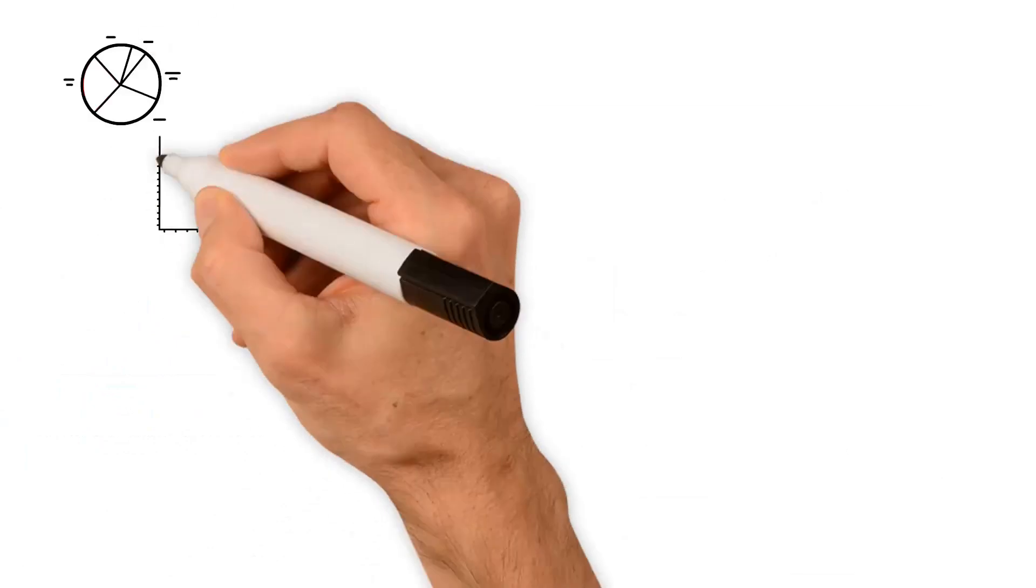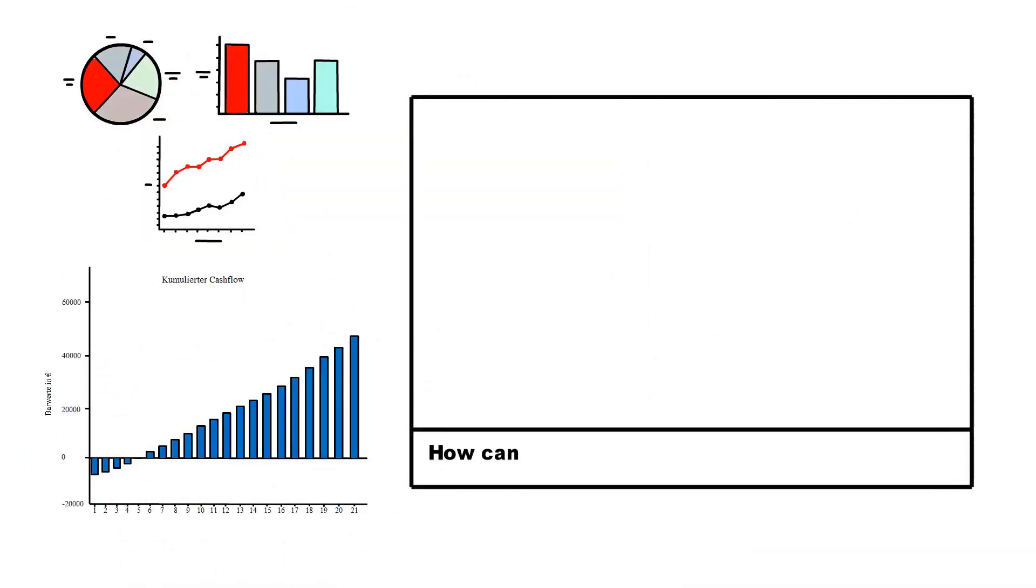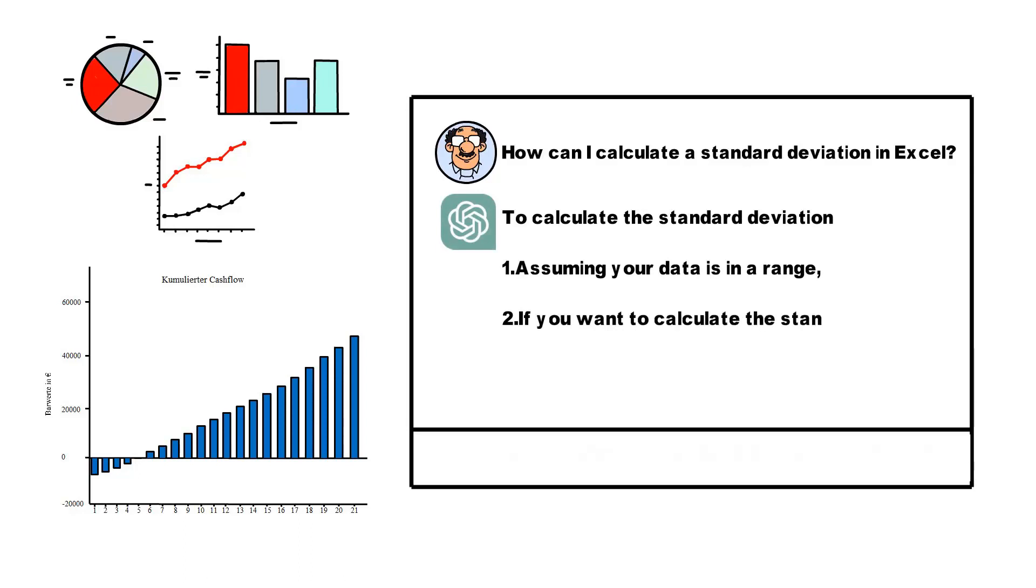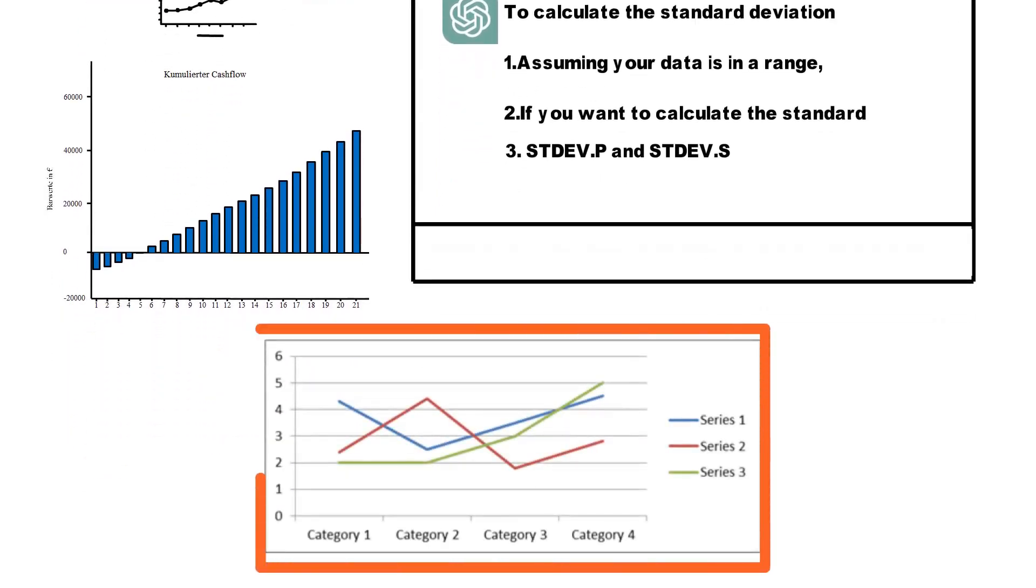If you're working with statistical data, you might need to use specific statistical functions. By asking, how can I calculate a standard deviation in Excel, ChatGPT would introduce you to the stdev.p and stdev.s functions, helping you understand when to use each one based on your data set.